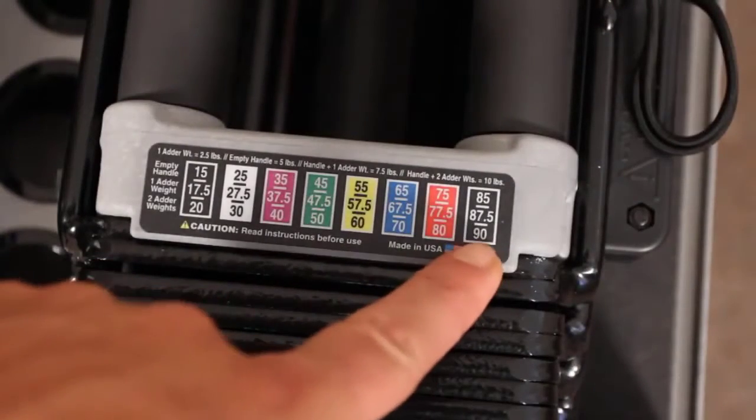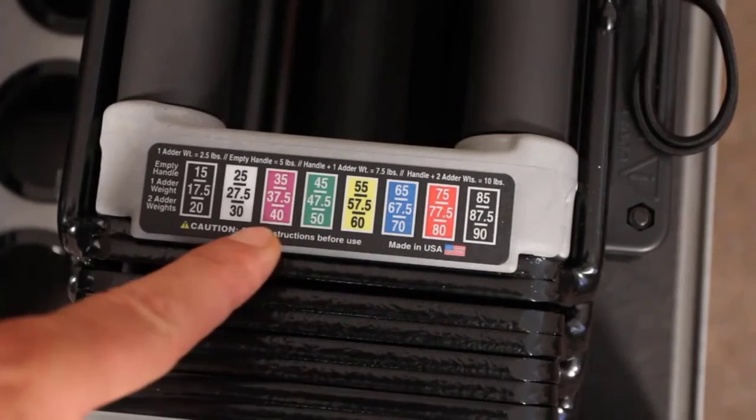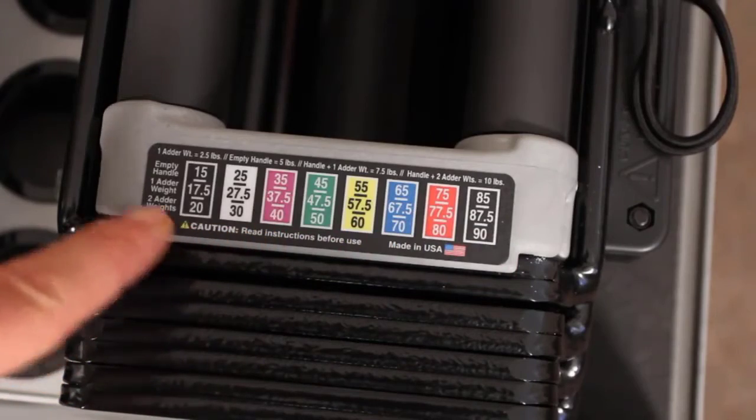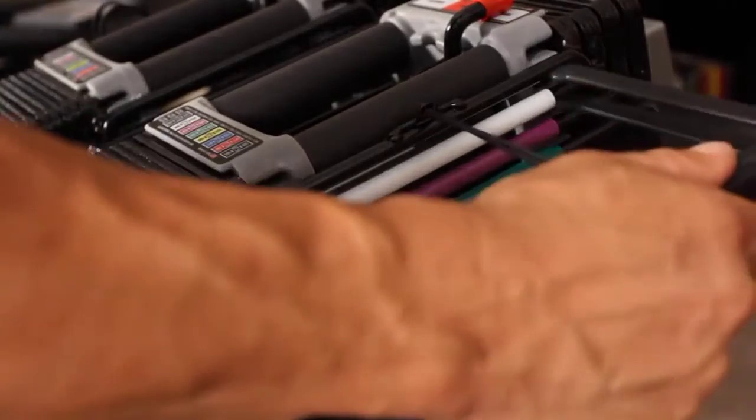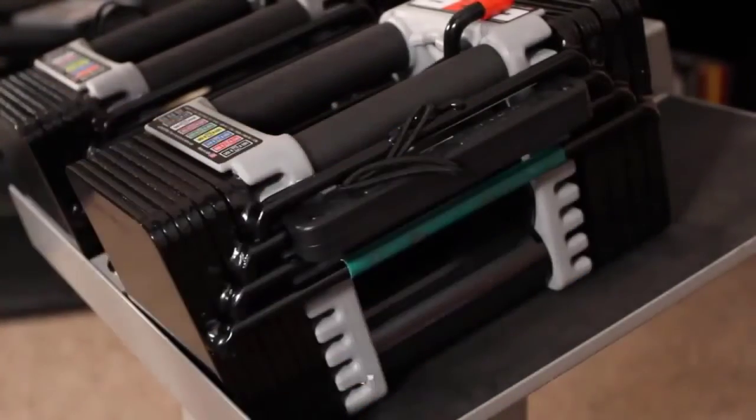A color-coded, easy reference weight chart on the handles lets you know exactly what weight you're selecting. Weight changes take just seconds by using a selector pin, much like a weight stack machine at a gym.